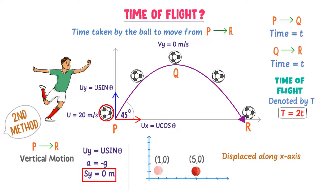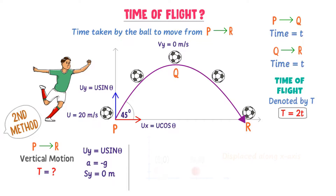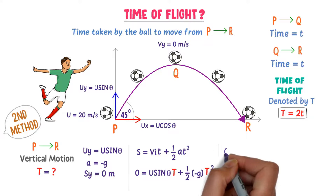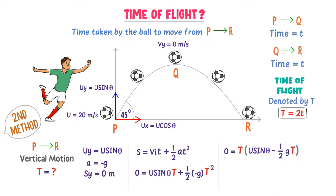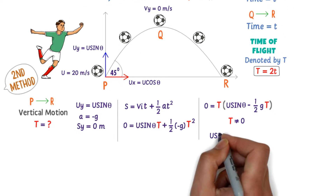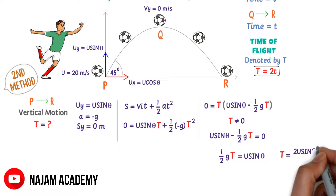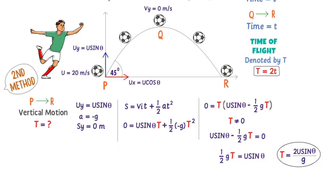At point P the ball is on the x-axis, and at point R it is again on the x-axis, so the vertical displacement Sy = 0. Using the equation s = ut + ½at²: 0 = u sin θ · T + ½(−g)T². Taking T common: 0 = T(u sin θ − ½gT). Since T ≠ 0, we have u sin θ − ½gT = 0, giving ½gT = u sin θ, and therefore T = 2u sin θ / g. This confirms the equation of time of flight.